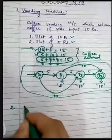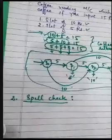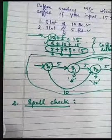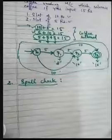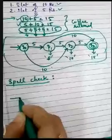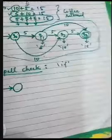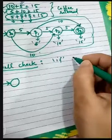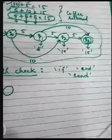The second case: finite automata is also used in spell check. In Word, whenever you are typing and something goes wrong, a red line appears indicating a spelling mistake, and you correct it. How can finite automata be used for spell checking? For example, starting from an initial state q, I want to check different spellings like 'if', 'and', and 'send'.